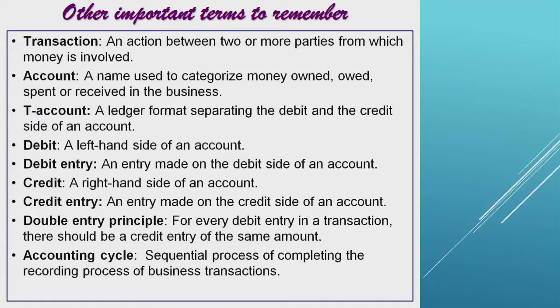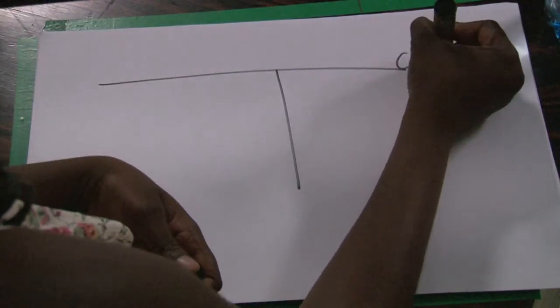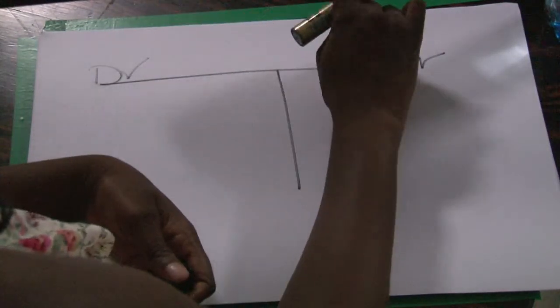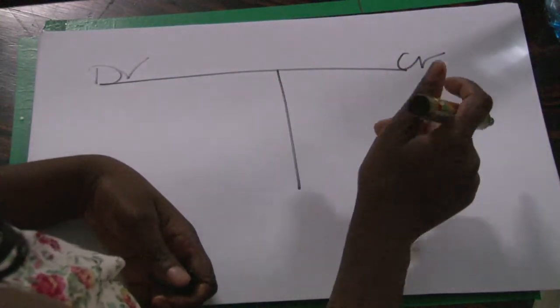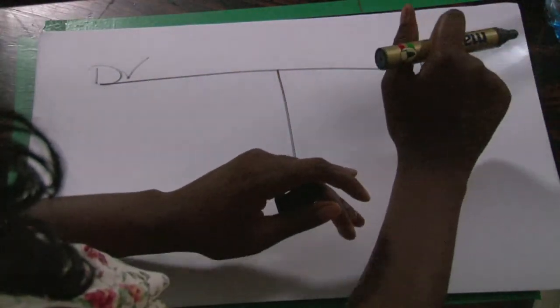An account is a name used to categorize money owned, money owed, or spent or received in the business. A T-account is a ledger format separating the debit and the credit side — the debit side is always on the left hand side of the account, while the credit side is always on the right hand side.